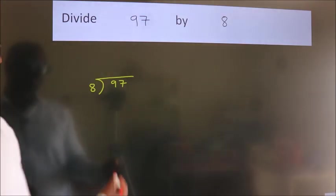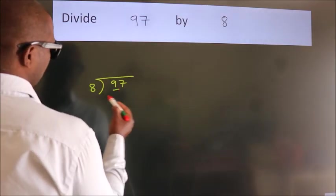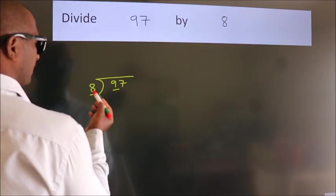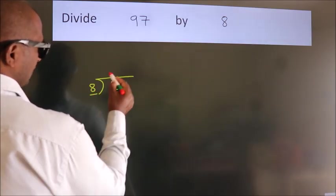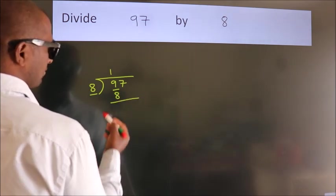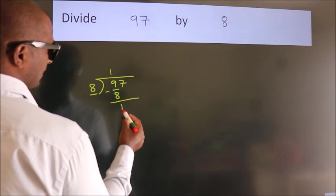Next, here we have 9, here 8. A number close to 9 in the 8 table is 8 times 1 is 8. Now, we should subtract. We get 1.